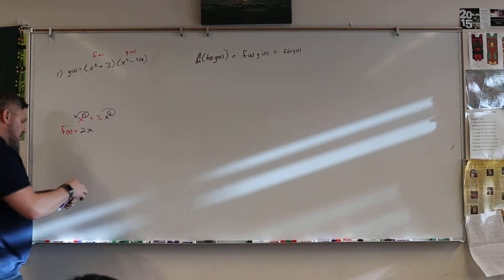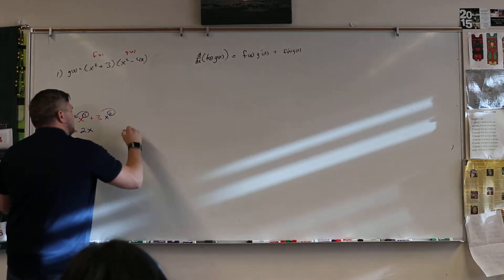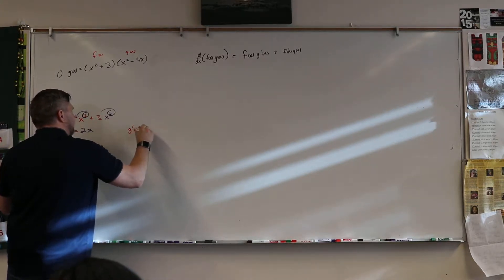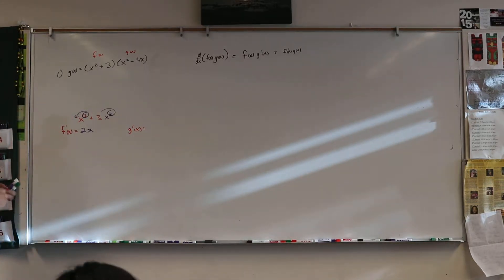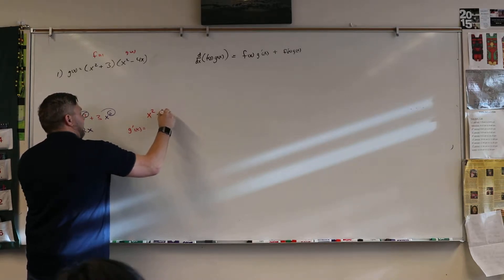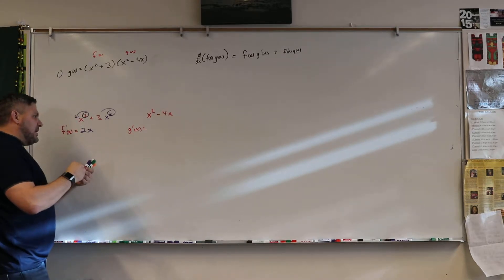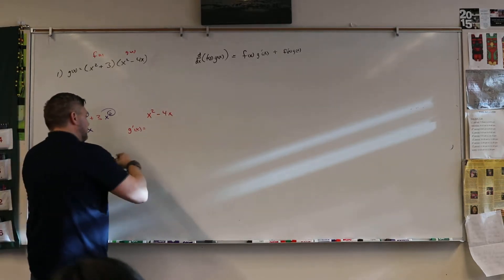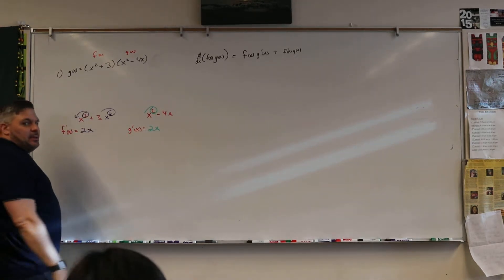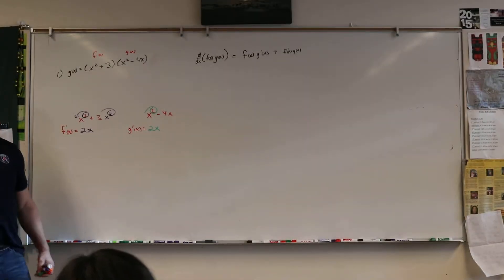And then we're going to find g prime x. And so g prime x is what? Good. So we already know it's squared and 4x. So it's going to be 2x. And then what? Does the 4 go away? Not this time. Why not?